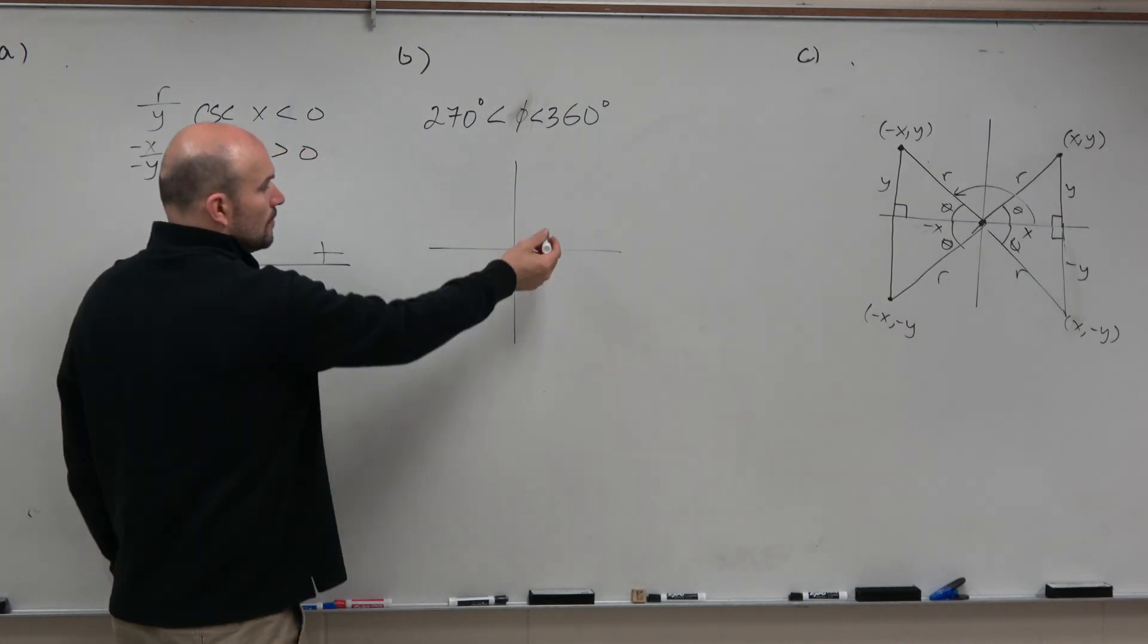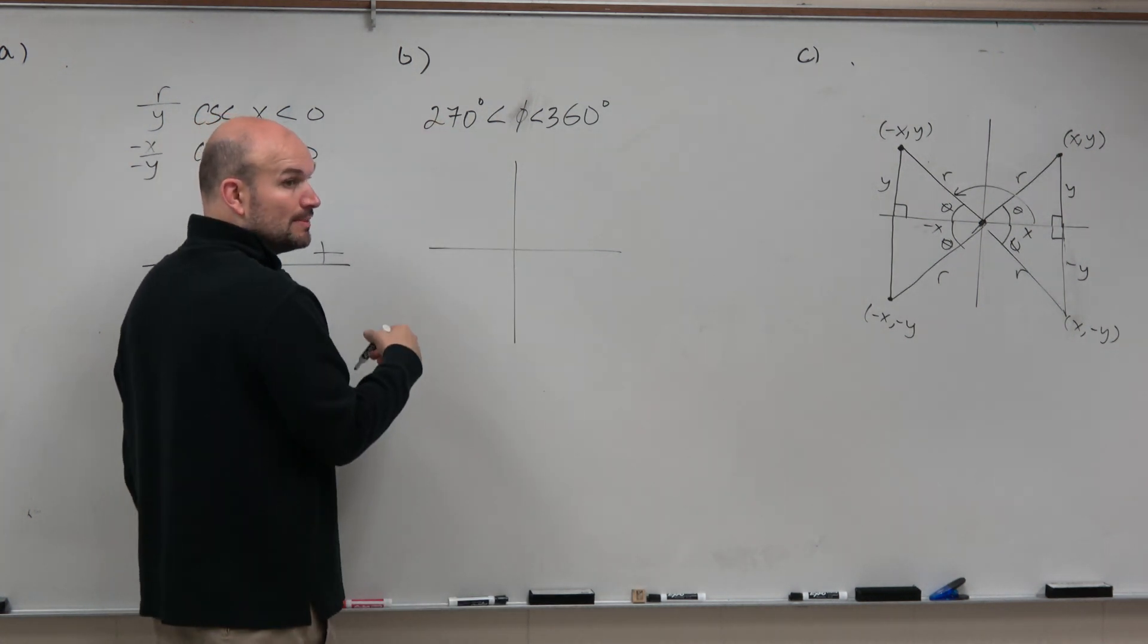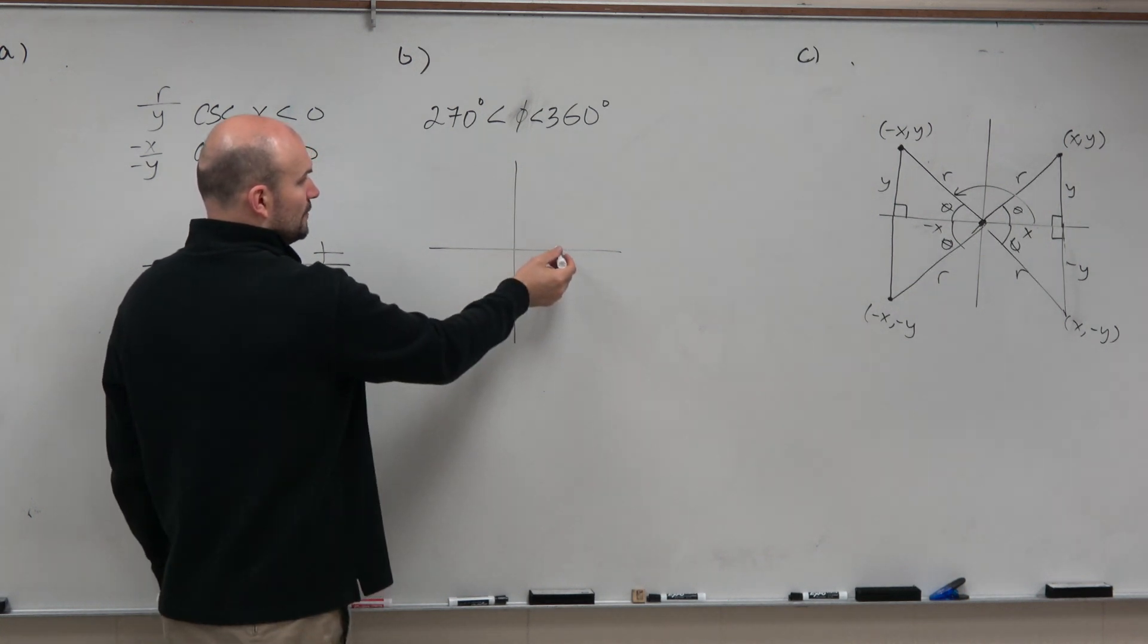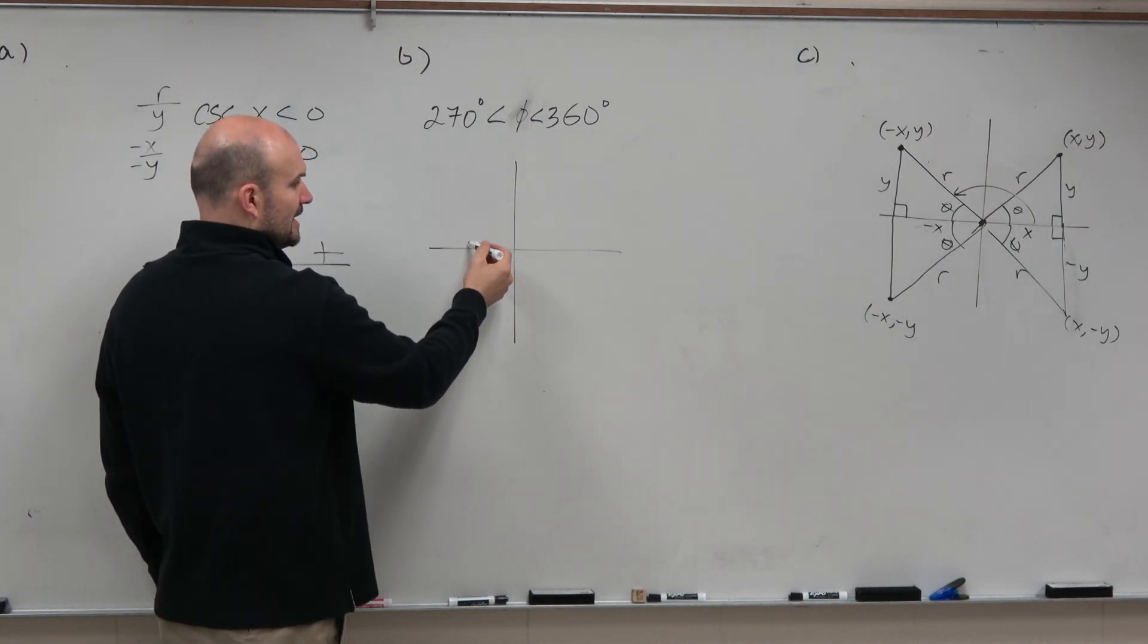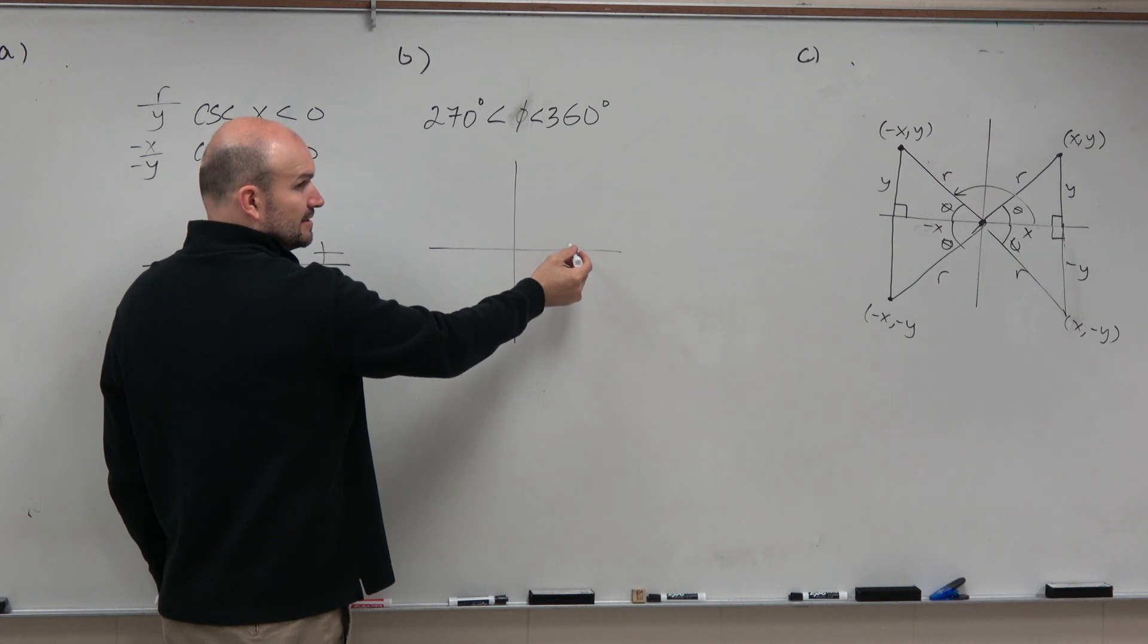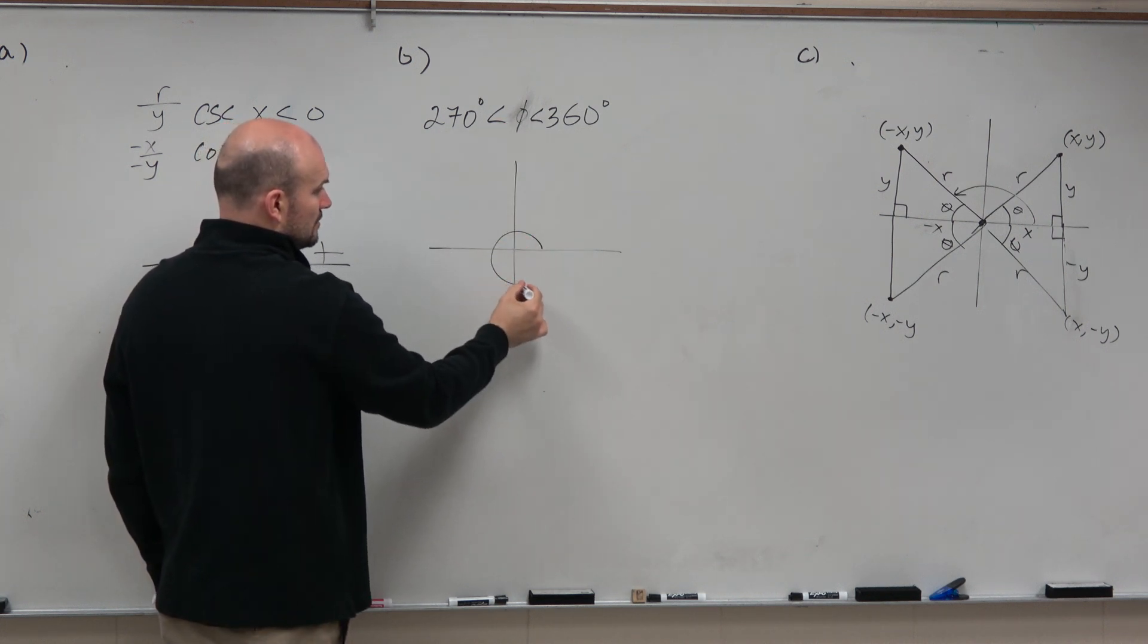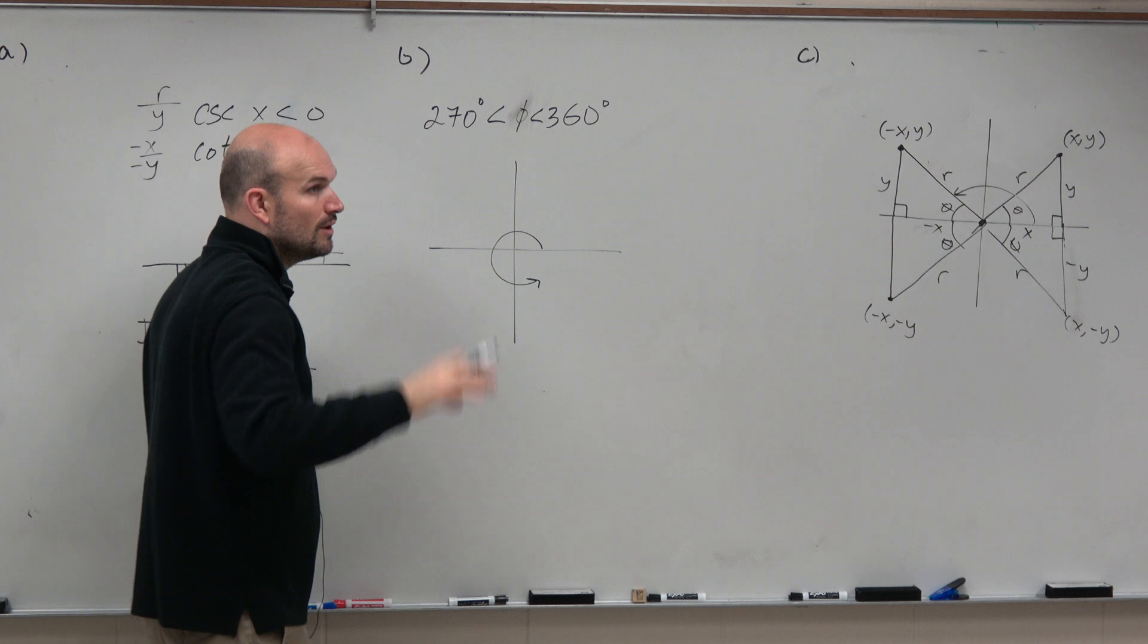So understanding our standard form, what we practiced last class period, hopefully we know that here's 90, 180, 270, 360, right? So phi is some angle somewhere in that quadrant.